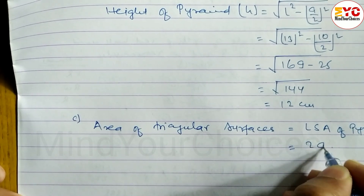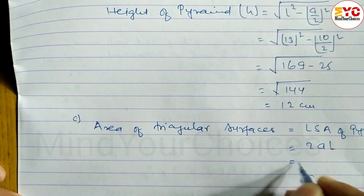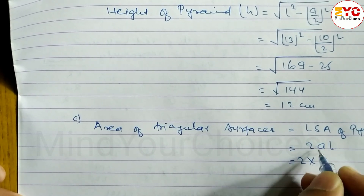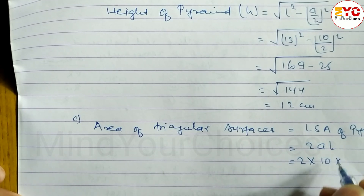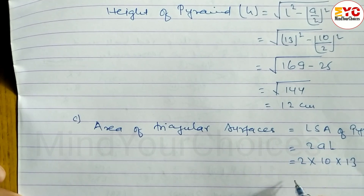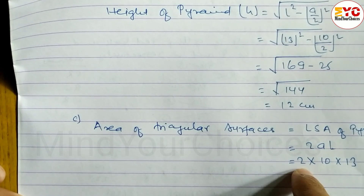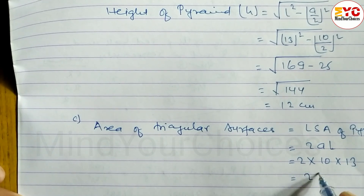The formula for lateral surface area of the pyramid is 2AL. So 2 into A, where A value is 10, into L, slant height is 13. Multiplying: 2 into 10 into 13 equals 260 cm².